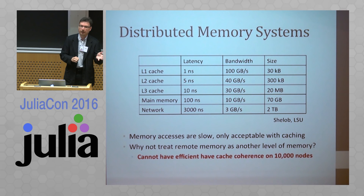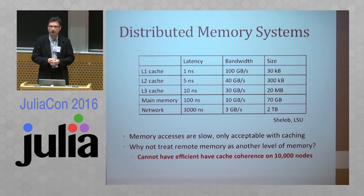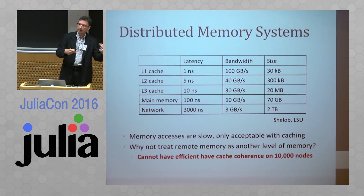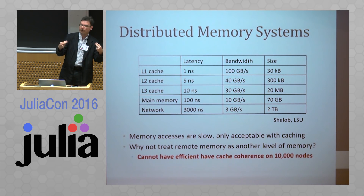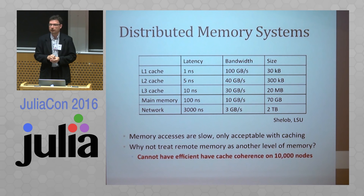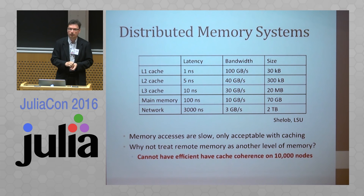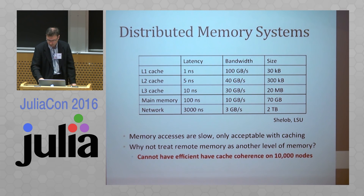Remote direct memory access is supported by InfiniBand and probably expensive Ethernet cards as well. You could even do caching in software at 3,000 nanoseconds — you can access a dictionary or something in software. The problem is that you can't have a coherent cache efficiently. If you have something cached and want to modify it, other processes might also have it cached and you need to tell them the value changed. If two processes want to modify the same value at the same time, one has to be first — there's a lot of communication, and you can't do that efficiently. It's even expensive on a single node. In large systems it simply doesn't work — you can't do efficient cache-coherent simulations, which means you need locking and other complicated mechanisms that make distributed memory computing so complicated.